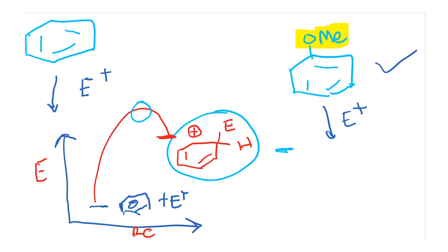This helps us reason out not just rates of reactions, but also ortho-para directing versus meta directing. The ortho and para positions are activated substantially more than the meta position. The stabilization offered to the intermediate produced in the ortho or para case is substantially more than in the meta case. So you can actually explain the ortho-para directing ability by invoking the Hammond postulate.